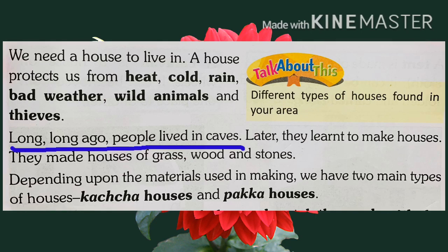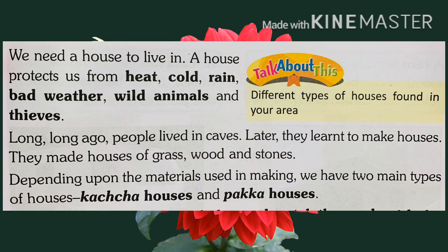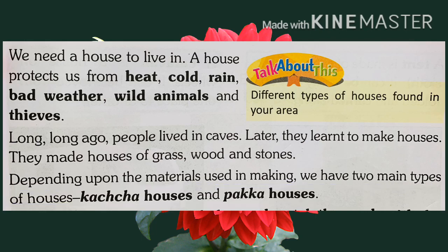Long ago people lived in caves — caves यानी जो गुफा होती हैं. बहुत पहले के time पे जब चीज़ों का invention नहीं हुआ था, तब लोग गुफा में रहते थे. Later they learned to make houses. They made houses of grass, wood and stones — शुरुवात में घर grass, wood यानी लकड़ी, और stone यानी पत्थर से बनता था. Depending upon the materials used, we have two main types of houses: one is kaccha house and second is pakka house.